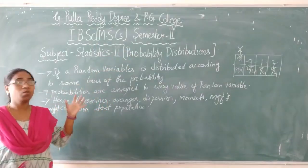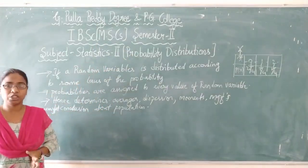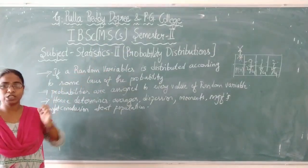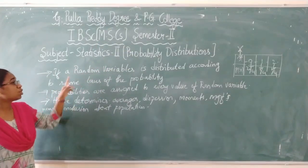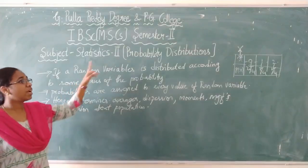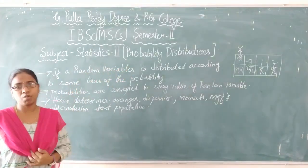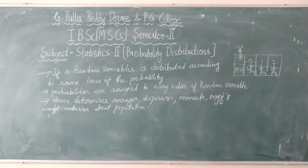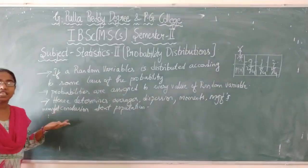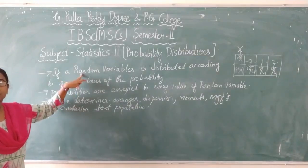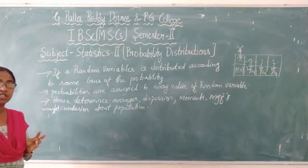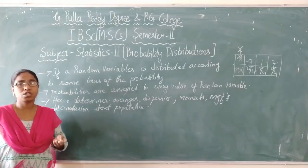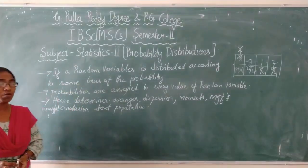Based on the type of random variable, we are going to have two types of probability distributions. The first one is discrete probability distribution, and the second one is continuous probability distribution. If the random variable is discrete, it is called a discrete distribution; if the random variable is continuous, it is called a continuous probability distribution.